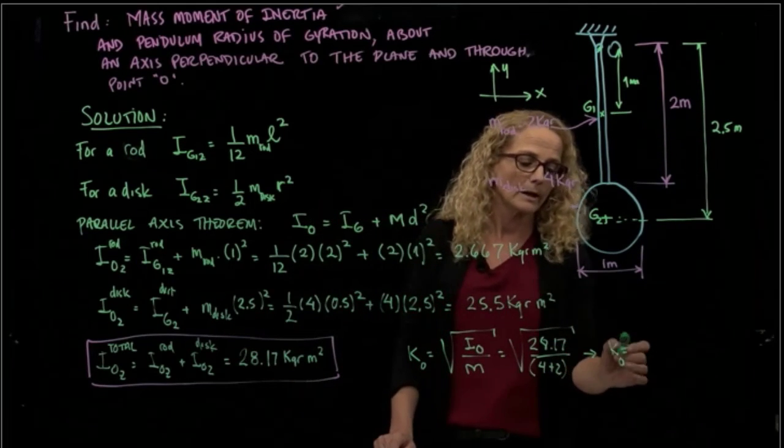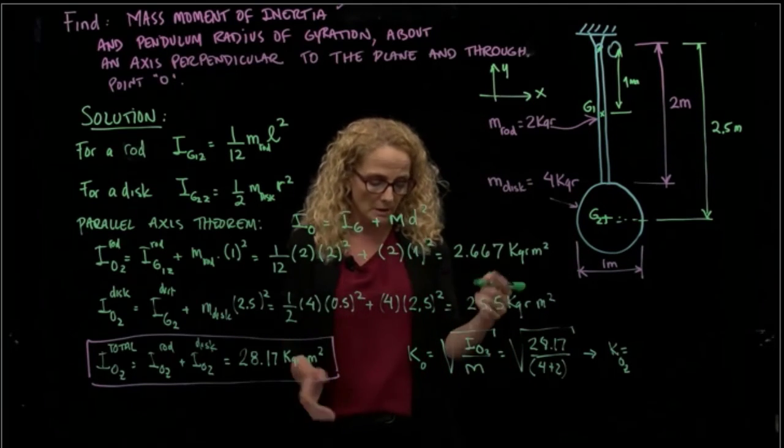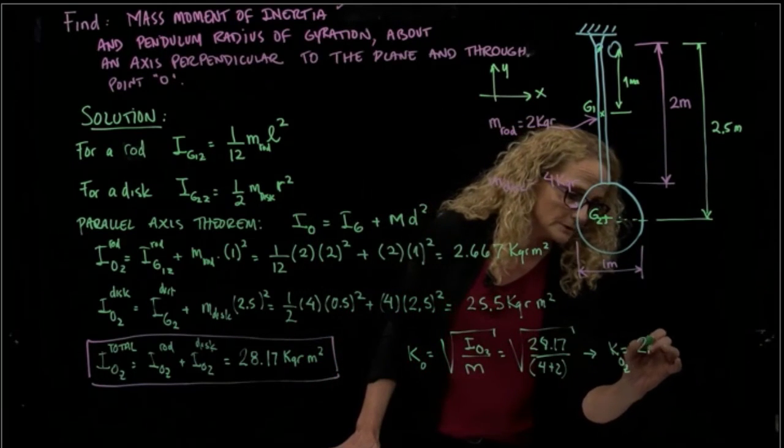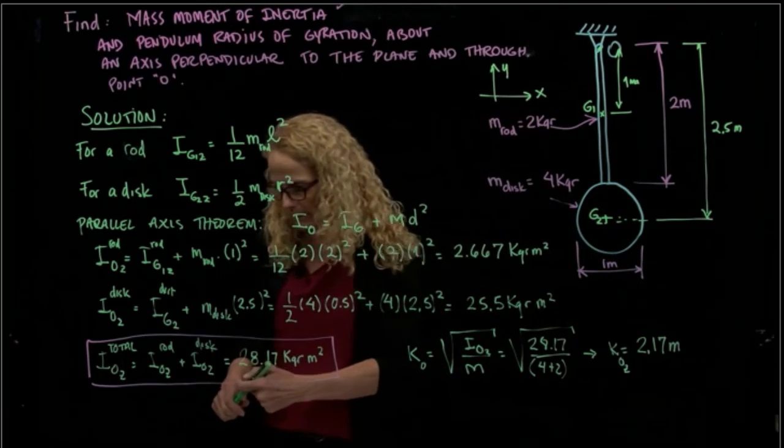because it's very important that the radius of gyration has to be about one point and in a specific axis. So that point A and in a specific axis, we could say the Z, because this is the inertia with respect to Z, will be 2.17 meters. And that's the other results we were asked to find.